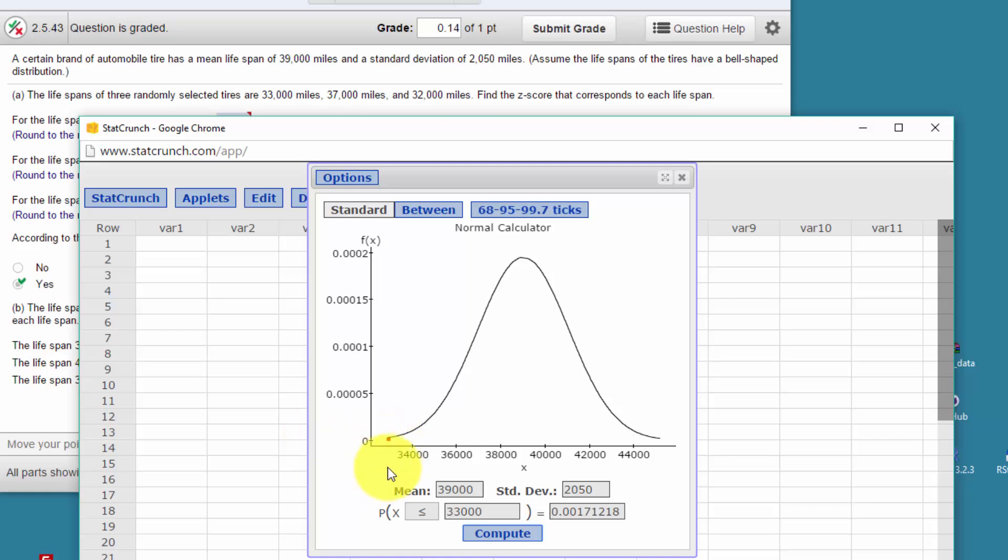There's a little red mark, and that's the area to the left of that value of 33,000. But we want a z-score. Well, the way we're going to do this: first of all, take your cursor and highlight that probability, then hold down the Ctrl key and click on C. We've copied that value to the clipboard.